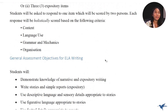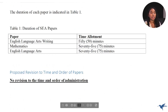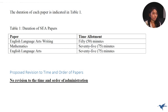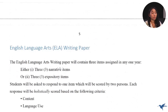There have been some changes, but of course there were no revisions to the time and order of administration. It remains at 50 minutes for the ELA writing paper — that is creative writing as we know it. We also have 75 minutes, which stayed the same, for the English Language Arts paper.